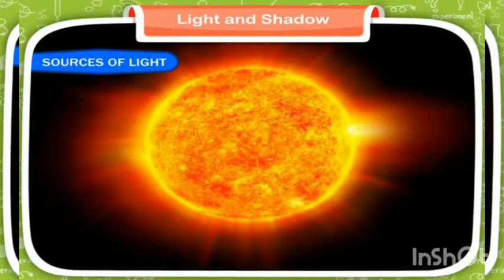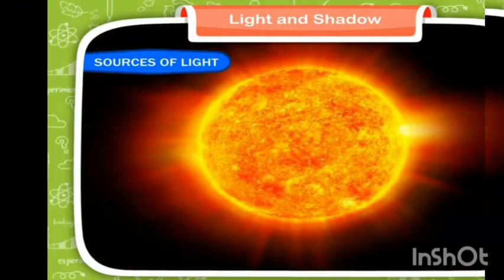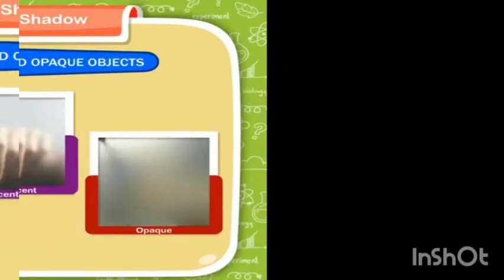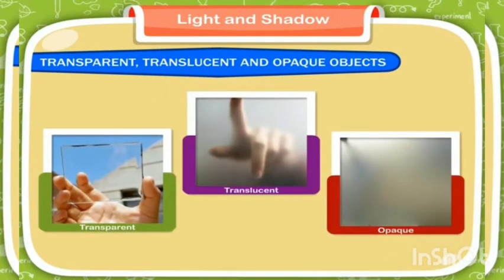Objects that give us light are called sources of light, and the Sun is the main source of light for our planet. Sun is the natural source of light. When light falls on any object, it can have either of three effects: transparent, translucent, or opaque.